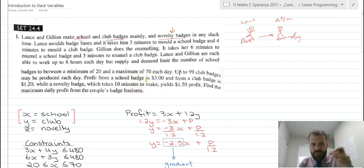Now, when I read these questions, I tend to get down to the bottom pretty quickly because I want to know what we're trying to maximise. So, profit is what we're trying to maximise. Profit from a school badge is $3, and from a club badge is $1.20. We're not dealing with novelty badges in our maximisation because it's done in the slack time. So the only things that matter for our maximisation is this. Profit is equal to $3 times the number of school badges plus $1.20 times the number of club badges. So we're only using school and club badges. There's our optimisation.